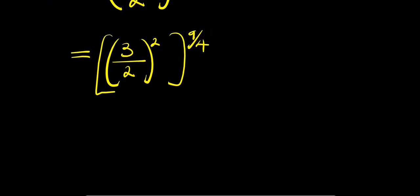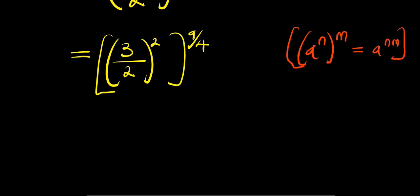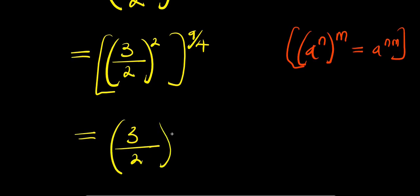Now, what we can do is consider this other identity: if you have a raised to the power of n, raised to the power of n, this equals a raised to the power of n times n. So, applying that here, this will give us 3 divided by 2 raised to the power of 2 times 9 over 4.